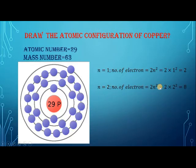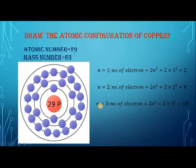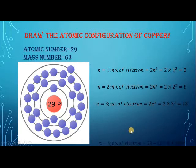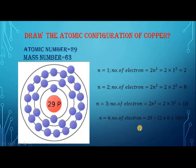For n = 2, we replace n with 2: 2 × 2² = 8. So the second orbit has 8 electrons. For n = 3: 2 × 3² = 18. The third shell has 18 electrons. To calculate the electrons in the last (fourth) shell, we add 2 + 8 + 18 = 28, then subtract from the atomic number: 29 − 28 = 1. So the last shell has only 1 electron.